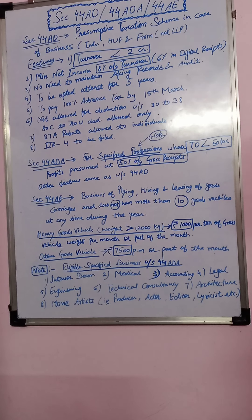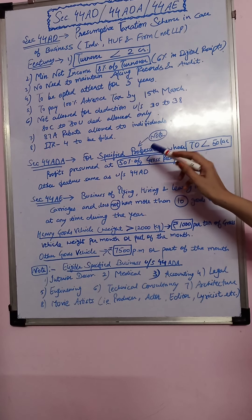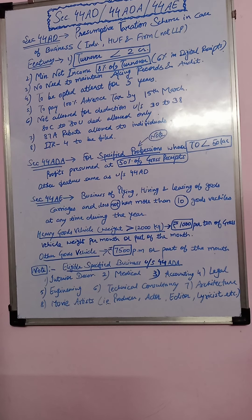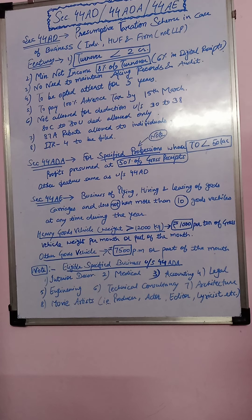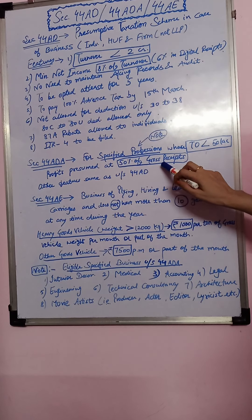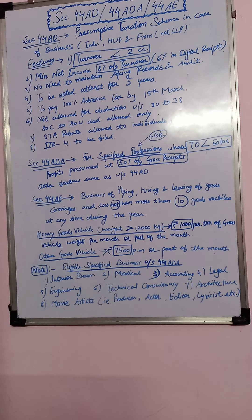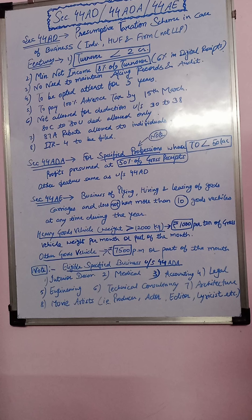Section 44ADA. 44AD was for what? This is for business. And 44ADA is for specified profession whose turnover is less than 50 lakh. If your turnover has not gone above 50 lakh, then you can opt for this scheme. Then what will be the deemed profit? 50% of gross receipt. Whatever is your turnover, whatever is the receipt, take 50% as your profit and then compute your tax on it.